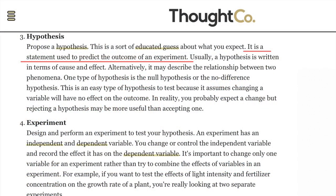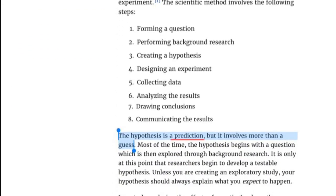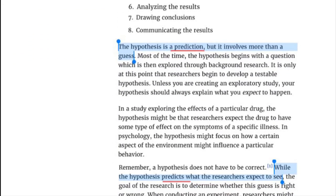Nope, they're one and the same. From ThoughtCo: a hypothesis is the statement used to predict the outcome of an experiment. From VeryWellMind: it is a specific testable prediction about what you expect to happen in a study. The hypothesis is a prediction but involves more than just a guess. So stop asserting otherwise, globe zealots — a scientific prediction is the hypothesis; they are one and the same.